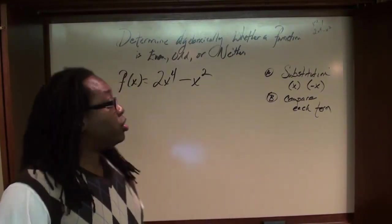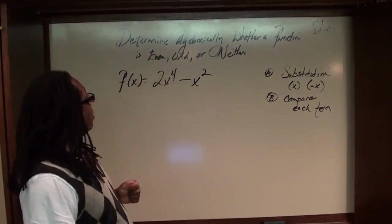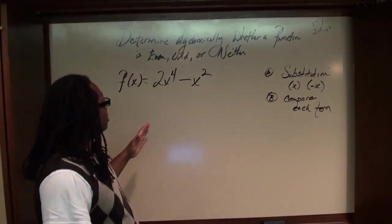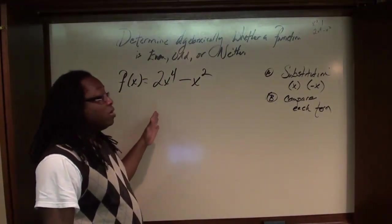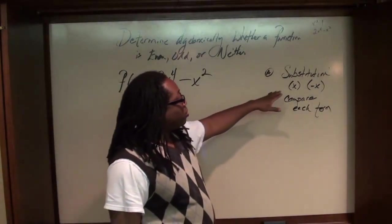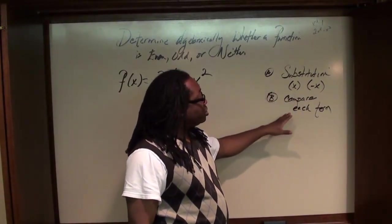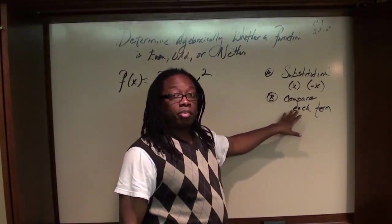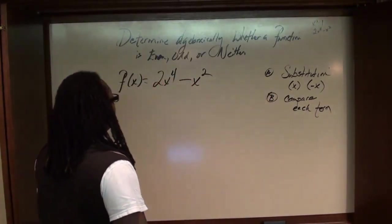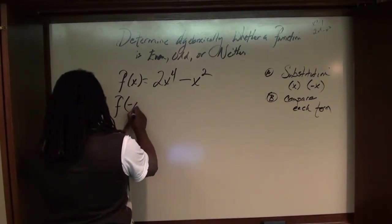Now we're going to determine algebraically whether a function is even, odd, or neither. In this case, the function is going to be even. Remember, we're going to make a substitution — that's the first thing. After we make our substitution, we're going to compare each term. So first, let's make the substitution: we substitute everywhere f(x) with negative x.